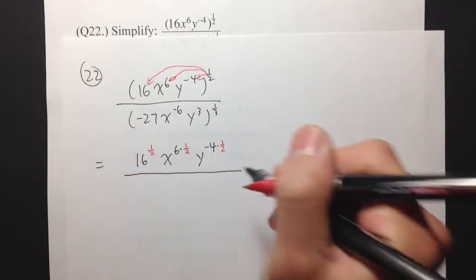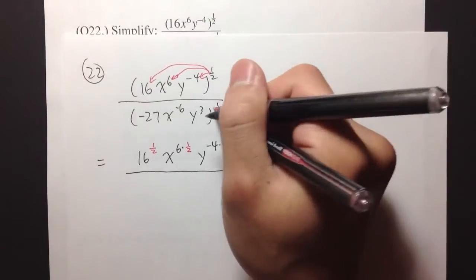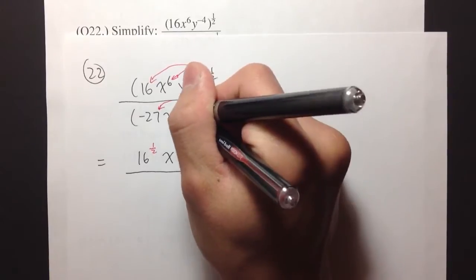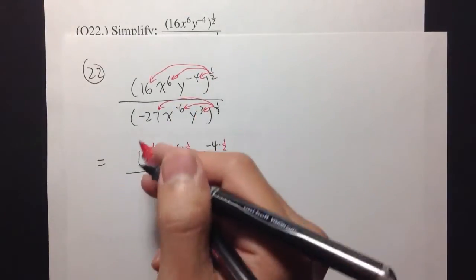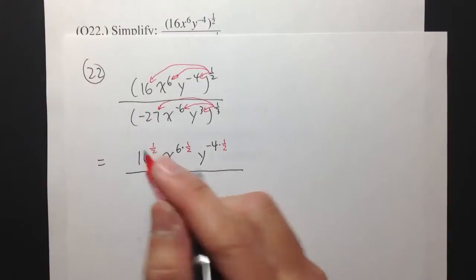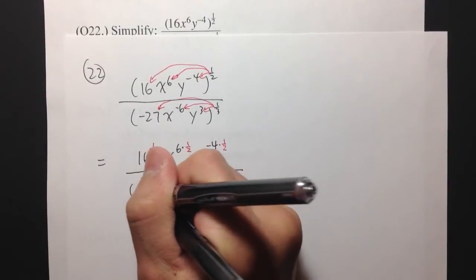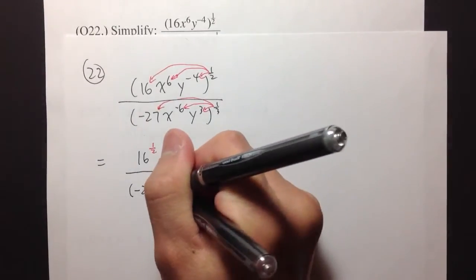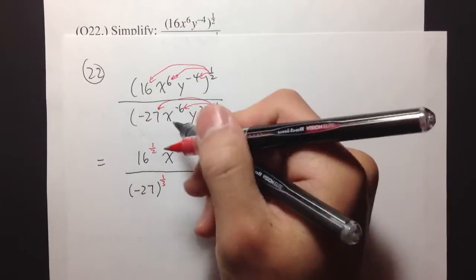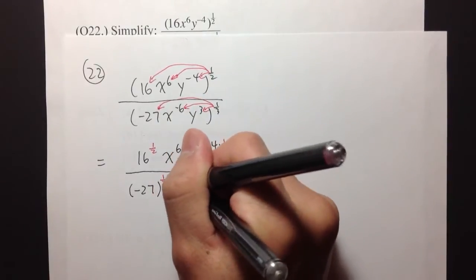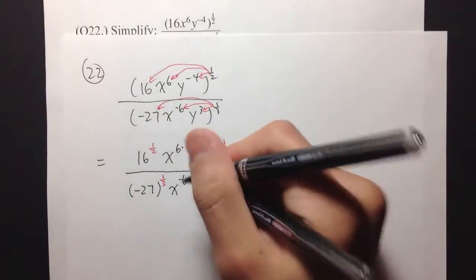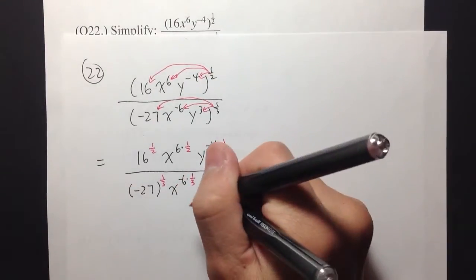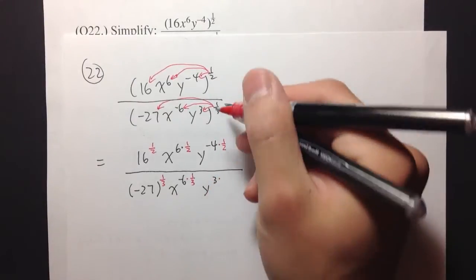And then over the denominator, which will be the same — you take the exponent and distribute it inside to each exponent inside. So first, we will have negative 27 in parentheses, raised to the 1 third power. And then I will have x to the negative 6 times 1 third on the exponent. The last one, y to the 3rd power times 1 third.